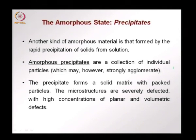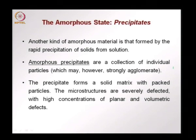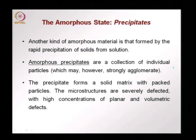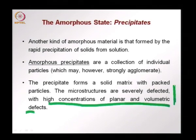Another kind of amorphous material is caused by precipitation of solids. Precipitation leads often to a disorderly structure. Amorphous precipitates are generally a collection of individual particles which can be strongly stuck together but still do not have an orderly or crystalline structure. The precipitate forms a solid matrix with packed particles. These structures are generally severely defected — they do not have very dense packing and have high concentrations of planar and volumetric defects.